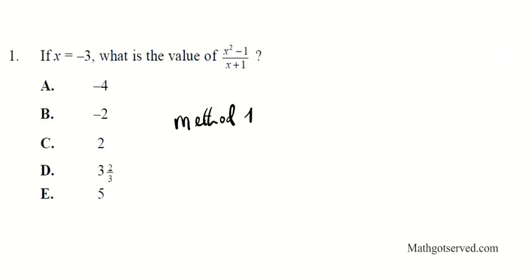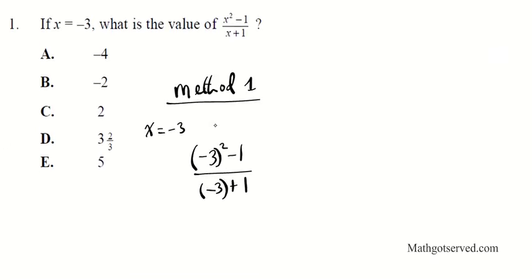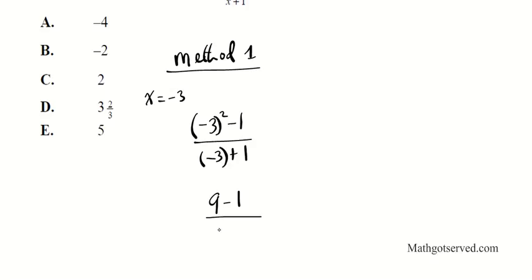Method 1 is direct substitution. I'm going to plug in x equals negative 3 into all the x's. That gives us negative 3 squared minus 1 over negative 3 plus 1. It's good practice to always use parentheses when substituting, especially when the value is negative. Negative 3 squared is 9. So we have 9 minus 1 over negative 3 plus 1, which is negative 2. That becomes positive 8 over negative 2, which equals negative 4.